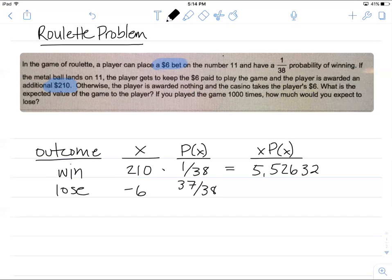We're going out to 5 decimal places on this. And then for the second row, negative 6 times 37 over 38 gives me a value of negative 5.84211.